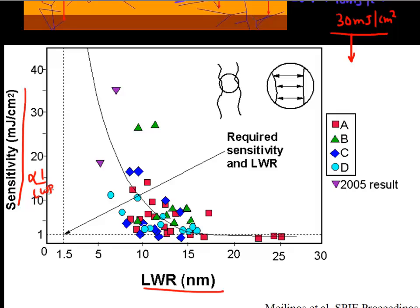So more the sensitivity you have in your resist, you get a lower line width roughness. What a higher sensitivity means is that you need much higher dose of incoming photons to form your patterns. And that essentially dictates that you have low line width roughness.